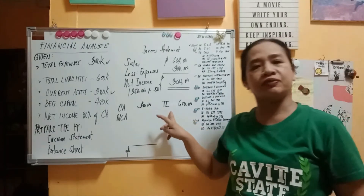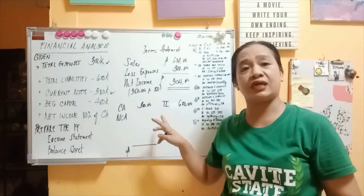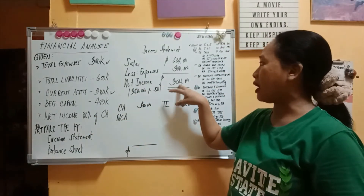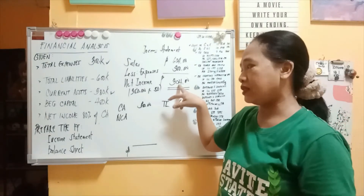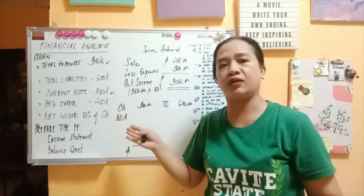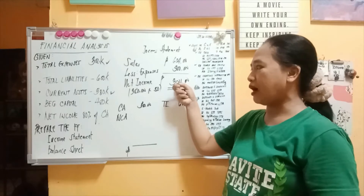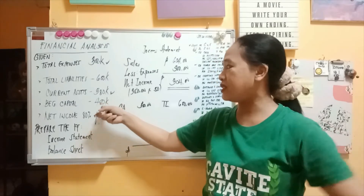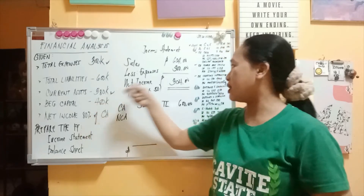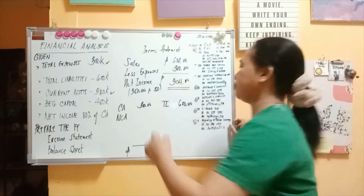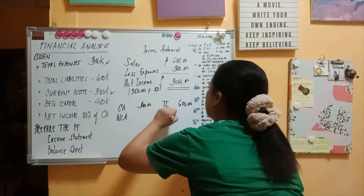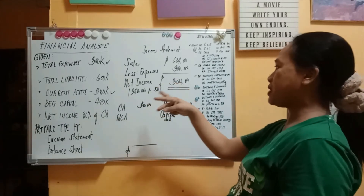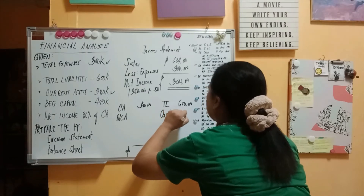Since we already have total liabilities, we need to compute the amount of capital. There is a beginning capital of 480,000 and net income of 304,000. To get the ending capital for the balance sheet, we add net income to beginning capital: 480,000 plus 304,000 equals 784,000. This is the ending capital on the balance sheet.